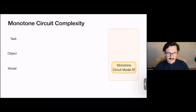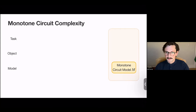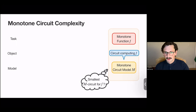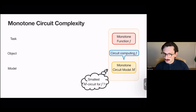In monotone circuit complexity, we're interested in certain models of monotone circuits or monotone computation. We have some particular monotone function in mind that we're interested in the complexity of computing. And we want to understand what the smallest circuit in this model of monotone computation is that computes this function — so proving lower bounds on the monotone circuit complexity of these functions.